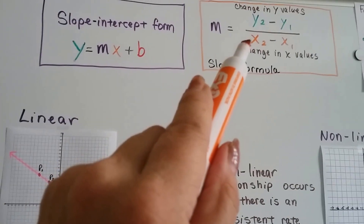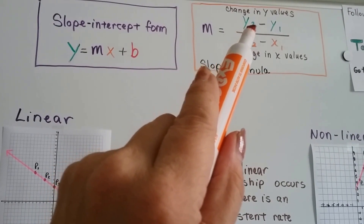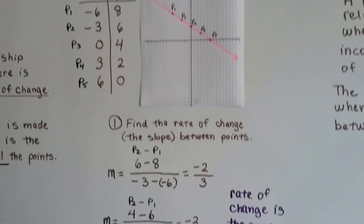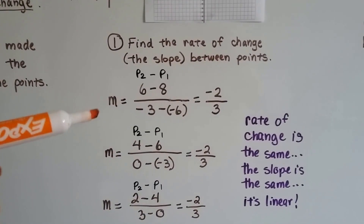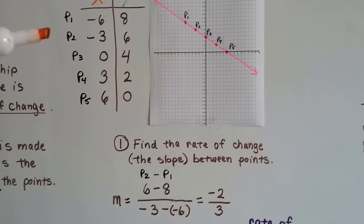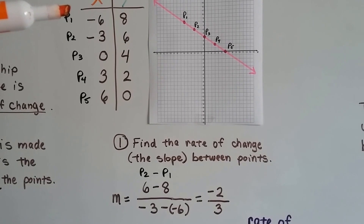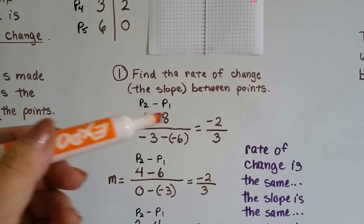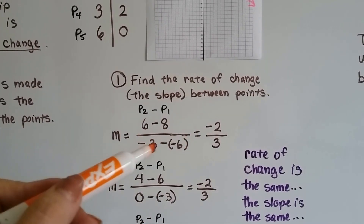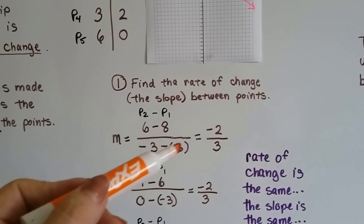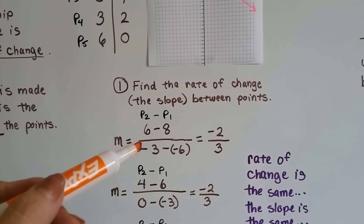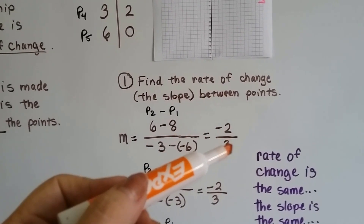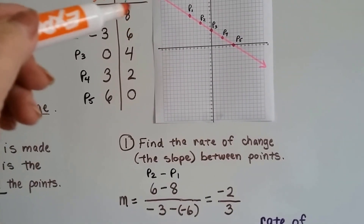So if we follow the slope formula and do our second y value take away our first y value, and our second x value take away our first x value, we can find our slope and the rate of change. For the first one, we're going to take 0.2 and subtract 0.1's values. So we've got 6 take away 8, and negative 3 take away negative 6. 6 take away 8 gives us negative 2. Negative 3 take away negative 6 — remember when you subtract a negative, you add the opposite — so negative 3 plus 6 is positive 3. So we've got negative 2 over 3 as our slope for these two points.